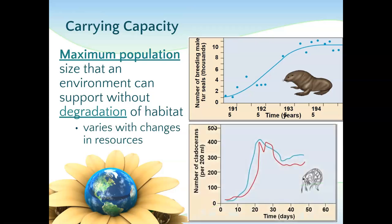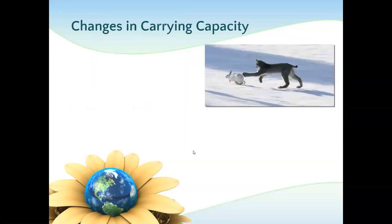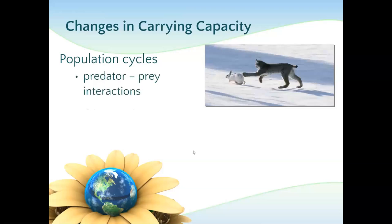Density-dependent factors are probably going to play a role in logistic growth. Carrying capacity is basically how many organisms can be supported within an environment without degradation of the habitat. Once you start destroying your own ecosystem, it's going to support less and less organisms. A lot of ecology just makes sense.